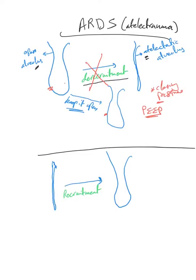In ARDS it's important to provide adequate PEEP because you have to preserve whatever alveoli are left open. The majority of the lungs have atelectatic and fluid-filled alveoli; only a minority are healthy, and you want to keep them open. That's why we commonly go to PEEP levels of 12, 14, 16, 18, even as high as 24.